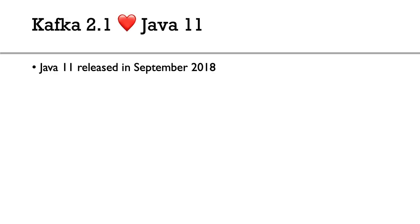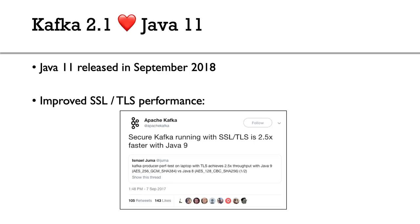The first Kafka internal change is that Kafka 2.1 is now available with Java 11, and that's a huge change. Java 11 was released in September 2018 and we get all the benefits from it. That means improved SSL and TLS performance — Ismail Juma, one of the main Kafka committers, found that SSL/TLS performance improved 2.5x faster with Java 9 and beyond.